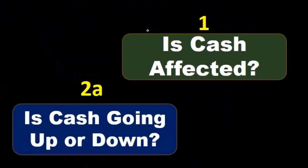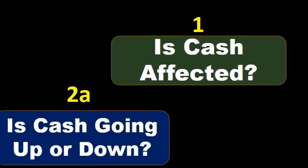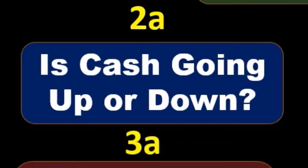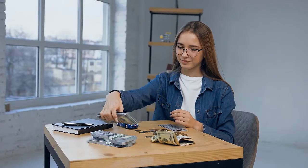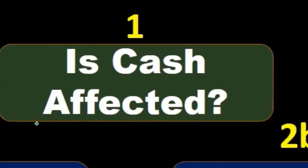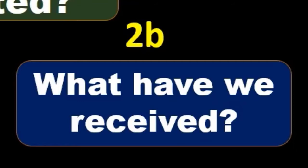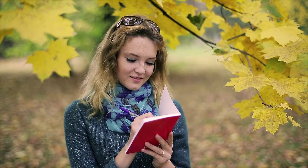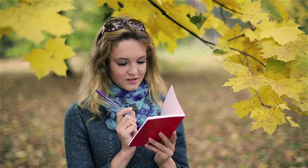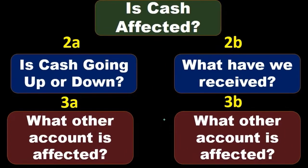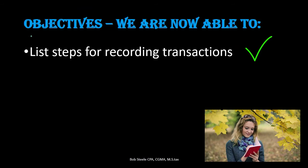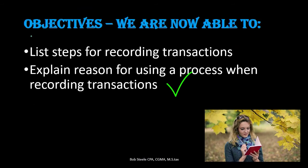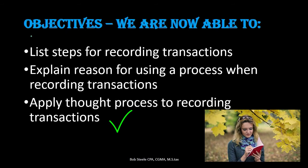Back to our thought process: the first question is, is cash affected? Second, if cash is affected, is it going up or down? We record the cash side of the transaction and then determine what happens to the other account — usually just one — using the direction of cash to answer that. If cash is not affected, we ask what have we received, which is often something easier to understand, and use that to determine what happens to the other account via the accounting equation. We are now able to list steps for recording transactions, explain reasons for using a process, and apply a thought process to recording transactions.